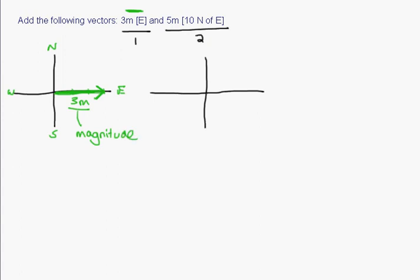And so the second vector is at 5 meters at 10 degrees north of east. Okay, so here we have east, here we have north, here we have south, and here we have west. And so the second vector here, I'm going to give it a red color.